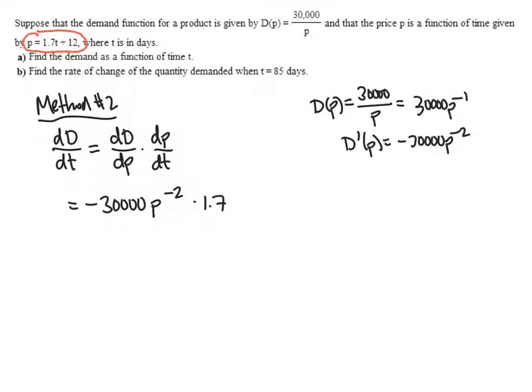So that's another formula for the derivative of our quantity. Now the only problem with it is that it's got a p in it, and they're asking us what the quantity is changing at 85 days. They want that rate of change. So all we need to do is figure out what the value of p is when t is 85. So that's not too bad. We're just going to have to plug 85 in for t, and that's going to give us our value of p. So that'll be 1.7 times 85 plus 12, and that works out to be 156.5.